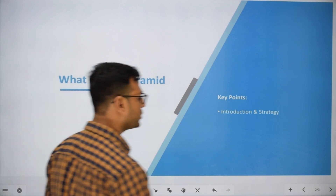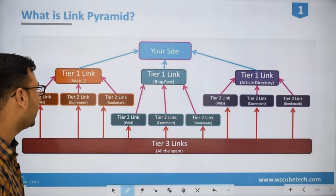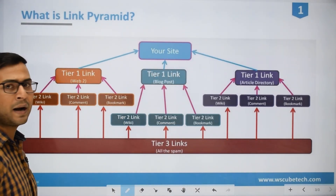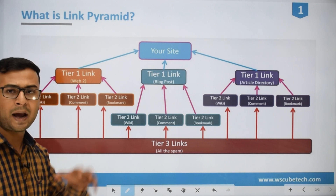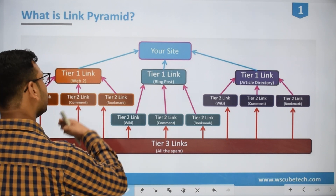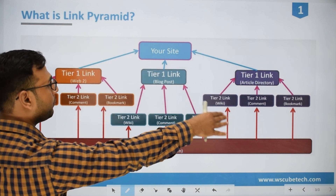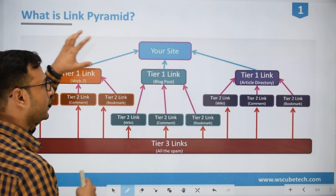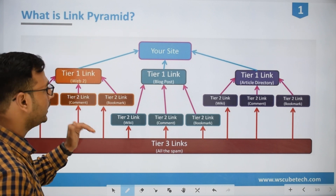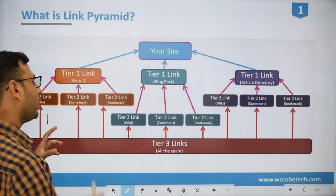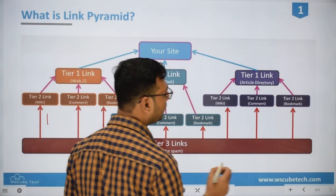Let's not waste time and straight away dive into this screen and see what is a link pyramid. A link pyramid is a process through which we actually create our backlinks, and it is in such a kind of structure that it forms like a pyramid. The links are arranged in tiers — we also call them levels, so let me mention that over here so you won't get confused.